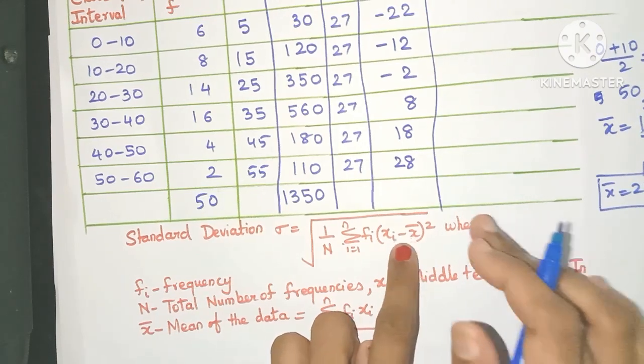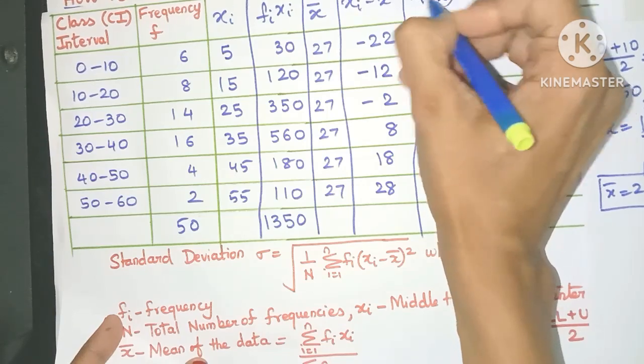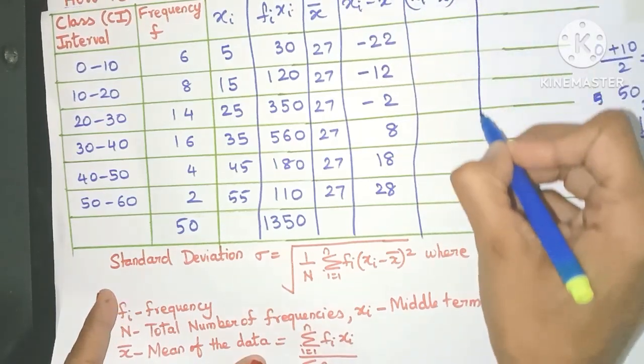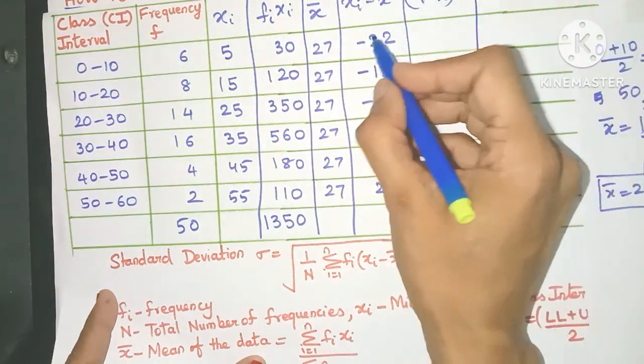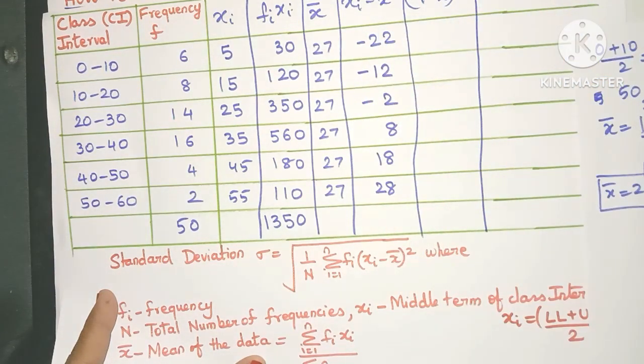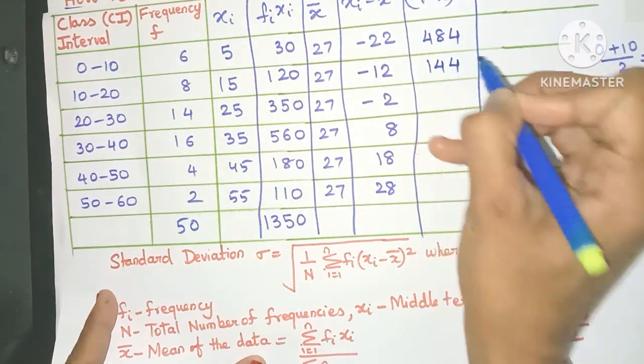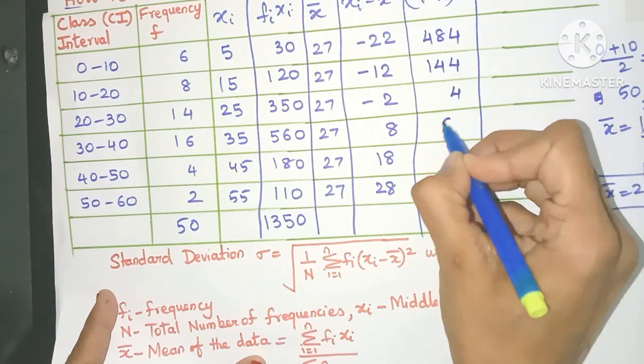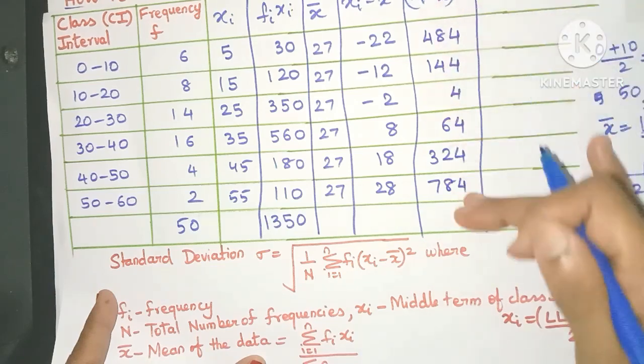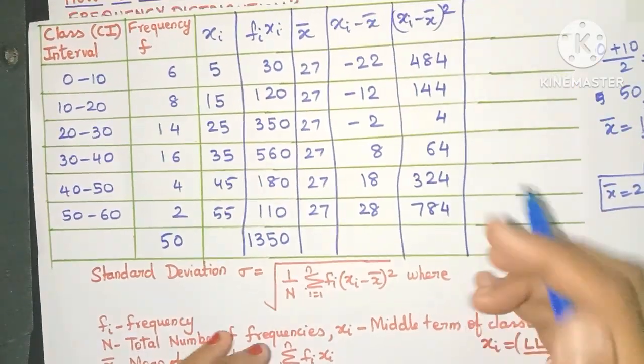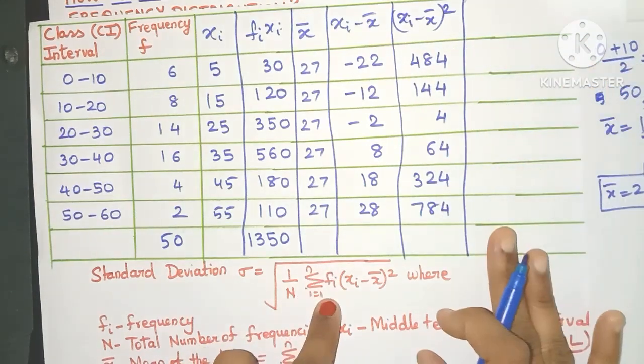Now what do we need to do next? That's right. We need to square this. See, xi minus x bar the whole square. So that will be our next column. Just need to keep looking at the formula for the next column. So just need to square this. So when you square, automatically the minus sign goes off. So 22 the whole square is 484. So this way you can fill up all these rows over here: 144, 4, 64, 324, and 784. So this column is also completed.